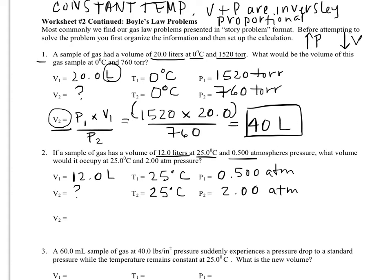So our final volume should be less than 12. So we're gonna use the same version of the equation. We won't always, although you'll find a lot of these problems do solve for a final volume. So we're gonna do 0.5 times 12 divided by 2.